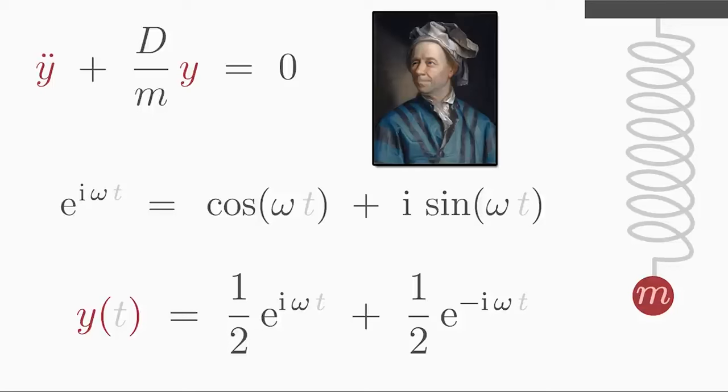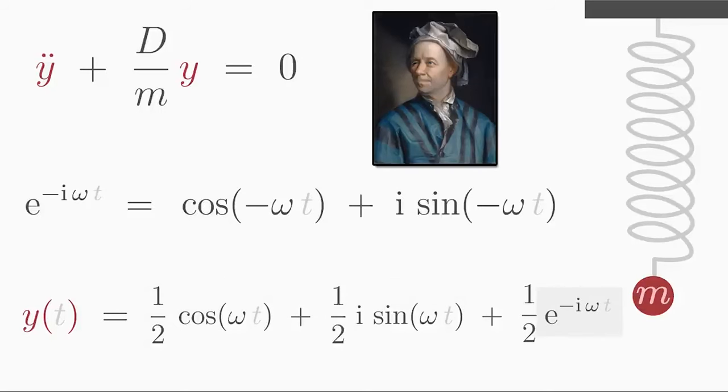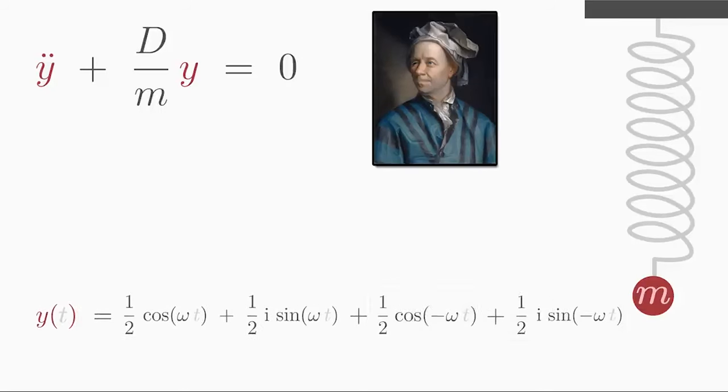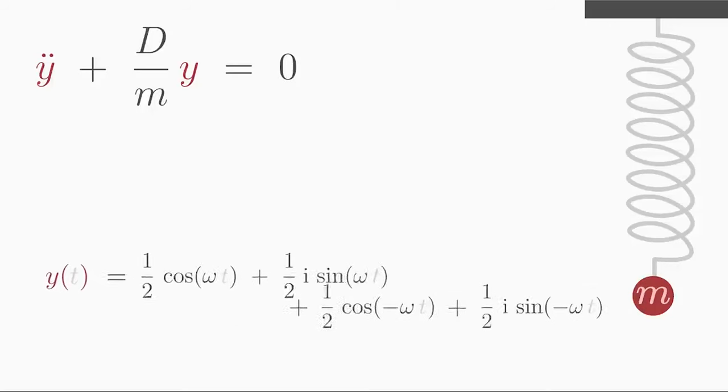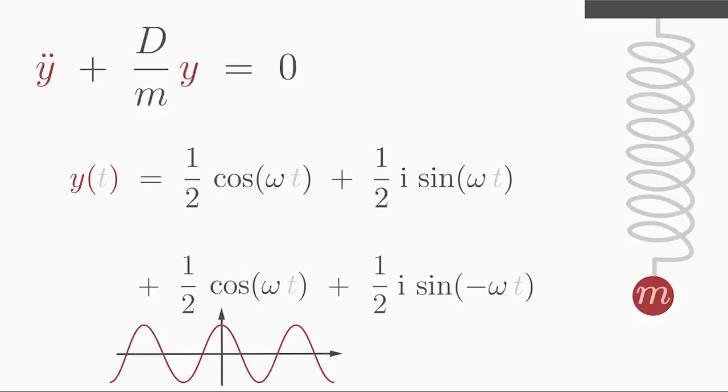So the first complex exponential in our solution becomes cosine and sine with positive omega t. And the second complex exponential becomes cosine and sine with negative omega t. We can omit the minus sign in the argument of the cosine function because cosine is symmetric. That means it has the same value for arguments x and minus x.